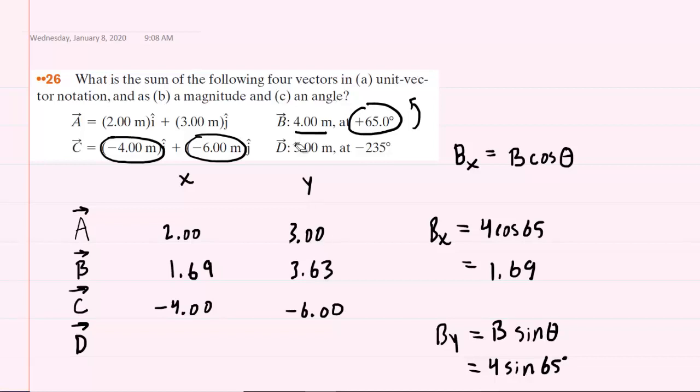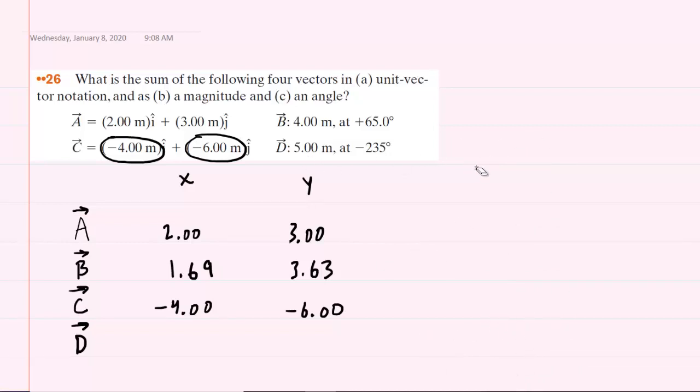Now, for vector D, same idea. We're going to find the X and the Y component. But this time we will be using the values given for vector D. So we'll speed it up just a little bit here. The X component is going to be 5 multiplied by the cosine of negative 235 degrees. And when you work that out, you will get negative 2.87 for the X component.